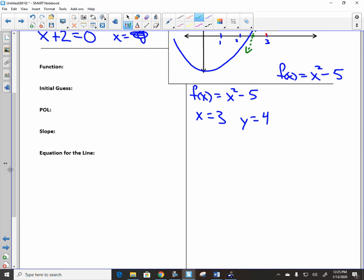No big deal. If you have an equation for a line, then we need to have a point on that line and we need to have the slope. What is our point on that line? 3, 4.